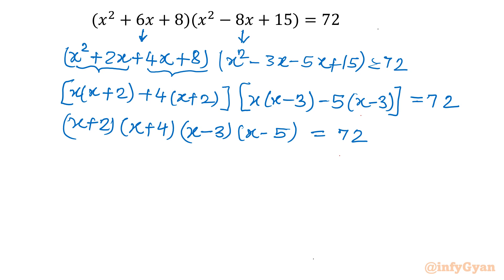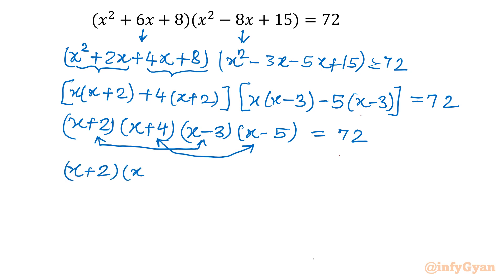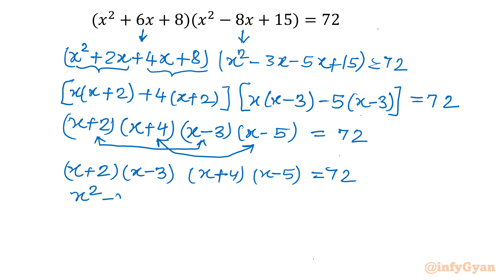Now I will pick these factors into two baskets: (x + 2)(x - 3) in one, and (x + 4)(x - 5) in the other. So the equation becomes (x + 2)(x - 3) times (x + 4)(x - 5) equal to 72. Expanding: the first product gives x² - 3x + 2x - 6, and the second gives x² - 5x + 4x - 20, equal to 72. That simplifies to (x² - x - 6)(x² - x - 20) = 72.